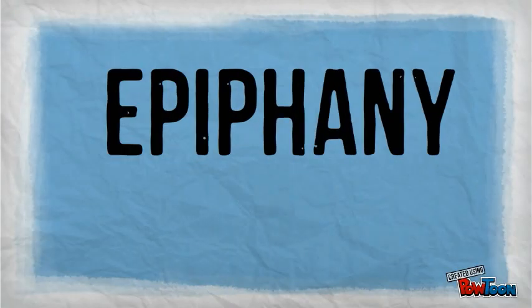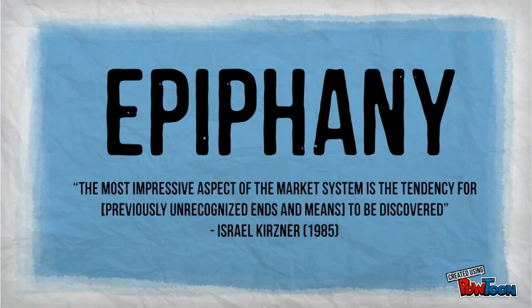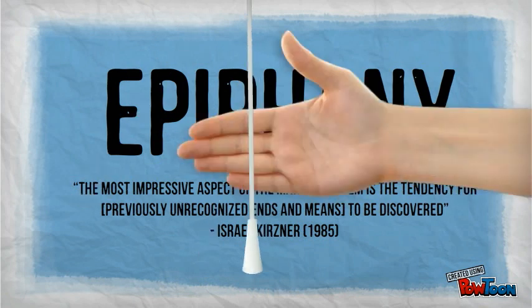The second aspect we want to highlight is epiphany — finding fortune by interpreting the world differently. A new interpretation creates new alternatives from which we have the freedom to choose. Kirzner describes it best: the most impressive aspect of the market system is the tendency for previously unrecognized ends and means to be discovered.